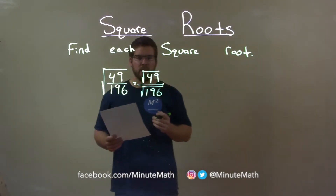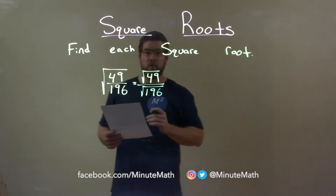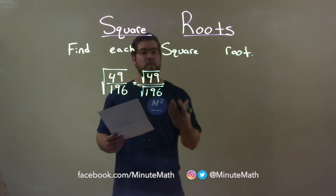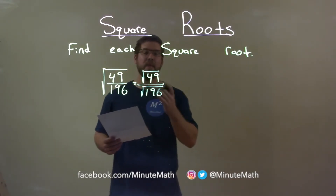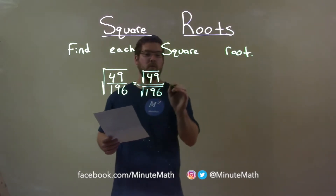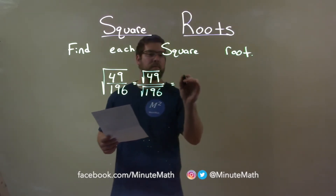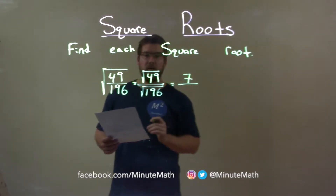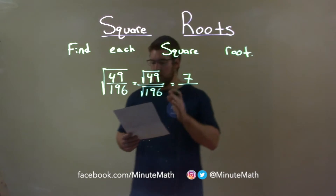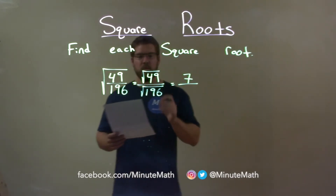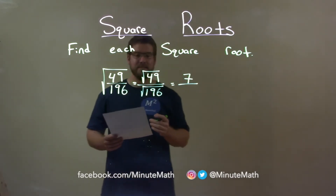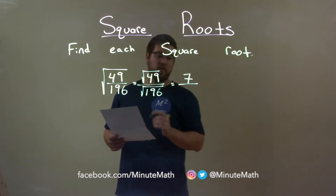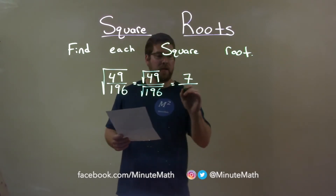Let's keep going. Square root of 49 — what number times itself is 49? That is 7. So the square root of 49 is 7. Now the denominator — same question. What number times itself is 196? That is 14. So the square root of 196 is 14.